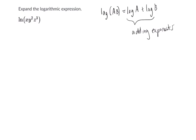What am I talking about, and how does it help us here? Well, we don't have A and B, but we have these three things, and they're being multiplied. So we can take the natural log of x plus the natural log of y squared plus the natural log of z cubed, and we have applied our first law of logarithms.